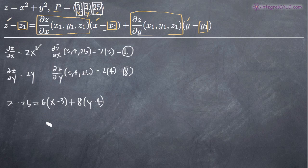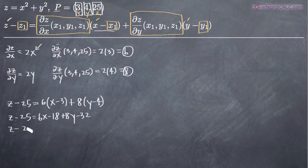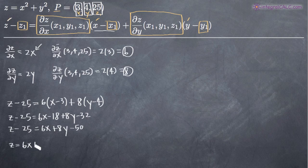We could leave the equation in that form, or simplify. So we get z minus 25 equals 6x minus 18 plus 8y minus 32. I want to get z by itself, so I'll write the x term first: 6x, then the y term: 8y, then the constant: negative 18 minus 32 is negative 50. Adding 25 to both sides gives us z equals 6x plus 8y, and negative 50 plus 25 is negative 25.